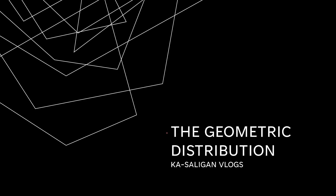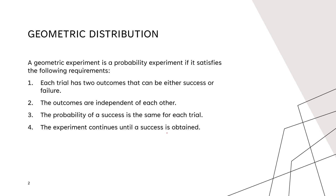Good day everyone. Today we'll be talking about geometric distribution and how to apply it. A geometric experiment is a probability experiment if it satisfies the following four requirements: first, each trial has two outcomes that can be either success or failure; second, the outcomes are independent of each other; third, the probability of success is the same for each trial; and fourth, the experiment continues until a success is obtained.